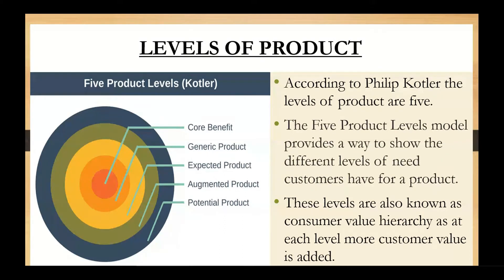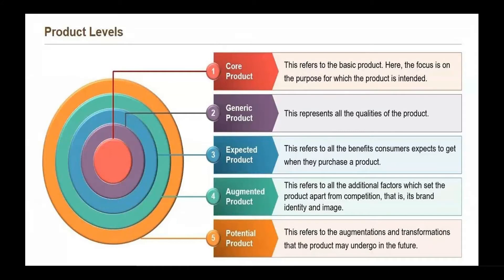The very first level is called the core level — the core benefit that your product is going to provide. When I purchase a car, it gives me the benefit of mobility, comfort, and safety for my family. If I talk about a smartphone, why do I purchase it? For communication, for connecting with the world, for convenience — 24x7 I can speak to my folks.